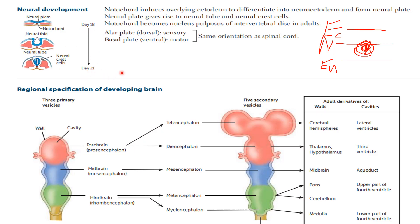Another important point is that the notochord becomes the nucleus pulposus of the intervertebral disc in adults. This is a question they usually ask, sometimes in a manipulated form, so you need to remember it. In the intervertebral disc we have a space called the nucleus pulposus, and it is derived from the notochord.